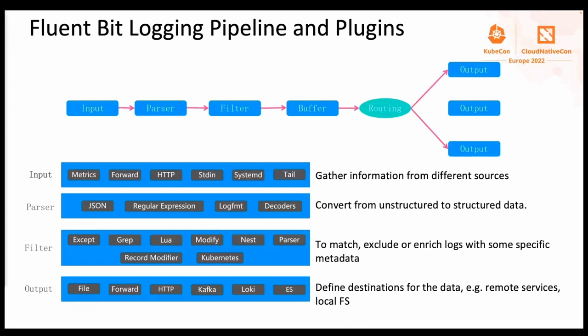The input plugin is used to gather information from different data sources. The parser is used to convert from unstructured data to structured data. Filter is used to match, exclude, or enrich logs with specific metadata. Output is used to define the destinations for the data — for example, remote sources, local file systems, Loki, Kafka, or something like that.